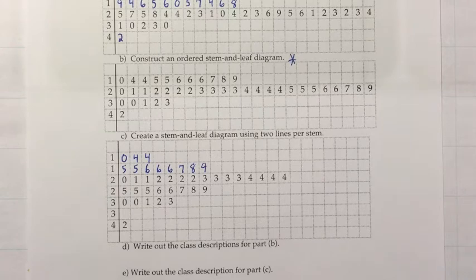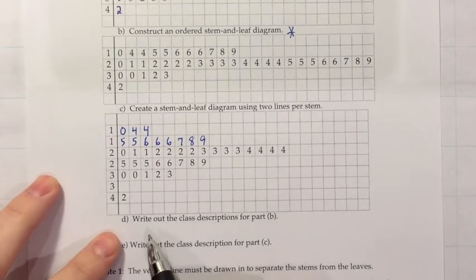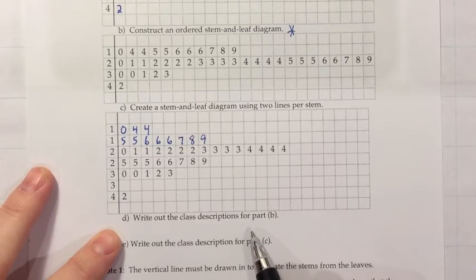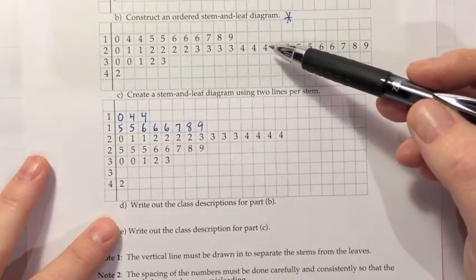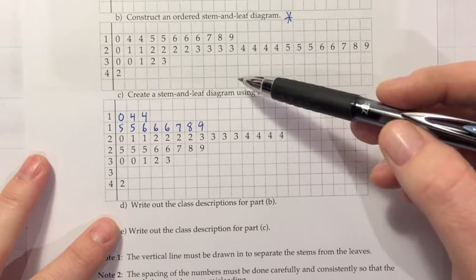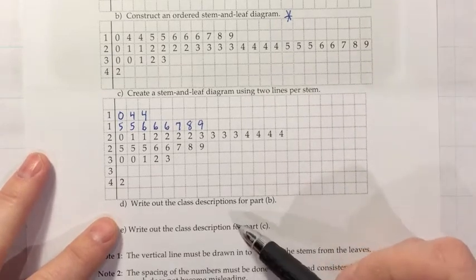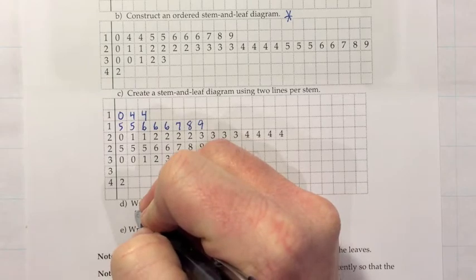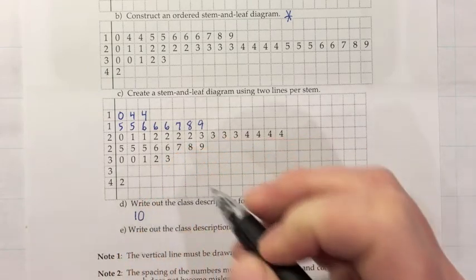Alright. Now for some follow-ups to that, let's do what they want in part D here, which is to write out the class descriptions for part B. So here was our finished product and we had tens, twenties, thirties, forties. But what are the actual class descriptions? So what you want to think about is where does that class start at 10 and where does it go to? And it went up to 19 in terms of what's included there.